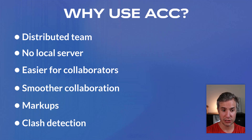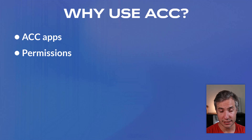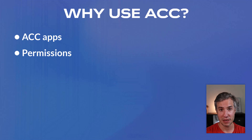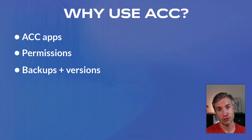ACC includes automated clash detection between different disciplines, making it much easier for you. There are also the ACC apps — lots of third-party apps on ACC that can do a lot for you. Permissions: you can control who sees, creates, or modifies files and Revit models. For example, the MEP engineer can see and link the architecture models but cannot open or delete the files directly. Then there are backups and versioning — each time there's a Revit model, there are backups for each sync and you keep different versions, although you should still keep a local backup every once in a while.